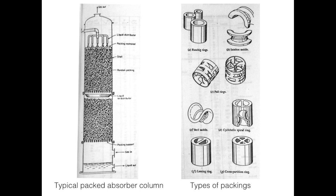This is a schematic of a typical packed absorber column, with common packing types shown on the right: Raschig rings at the top, Intalox saddle on the right, then Pall rings, Berl saddle, cyclohelic spiral ring, Lessing ring, and cross partition ring.